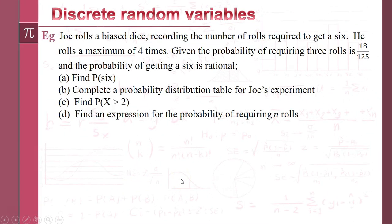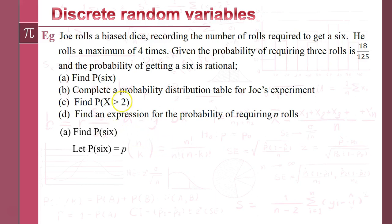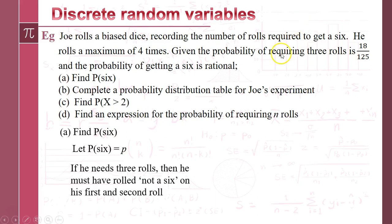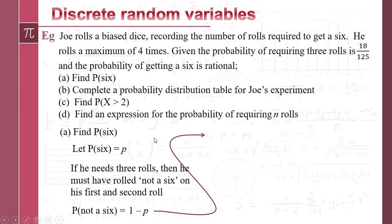Here's another example. Joe rolls a biased dice and records the number of rolls required to get a 6, rolling a maximum of 4 times. Given that the probability of requiring 3 rolls is 18/125 and the probability of getting a 6 is rational, we need to find that probability. Let P be the probability of getting a 6. If he needs 3 rolls, he must have had 2 failures first. So we have (1−P) times (1−P) times P equals 18/125.